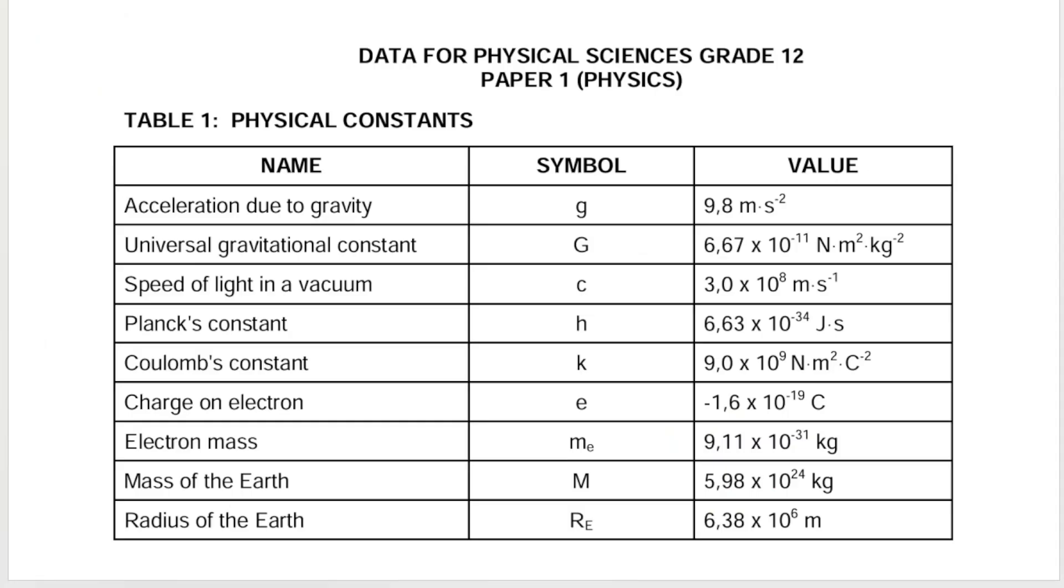Here's a list of all the constants that you will get in your physical sciences paper. The ones I'm highlighting are relevant to this particular section: speed of light in a vacuum, Planck's constant, and the electron mass.